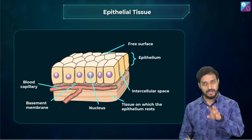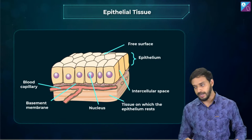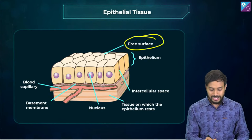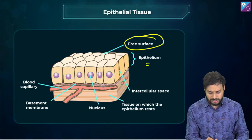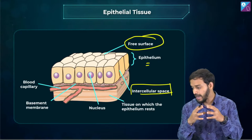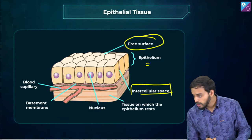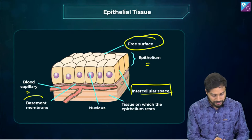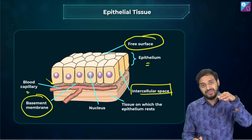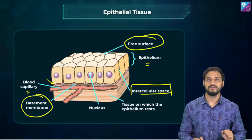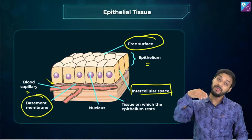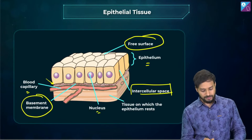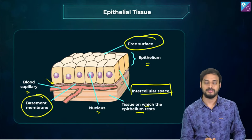You can visit the NTA website for clear instructions about the NEET examination. Also follow this channel — community posts and videos are being posted frequently with updates. Now, looking at the image: the free surface is the epithelium, cells are compactly arranged with intercellular spaces, and blood capillaries are found beneath the basement membrane — hence it is avascular.